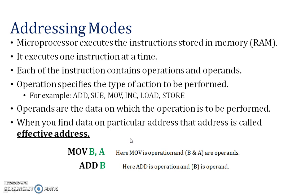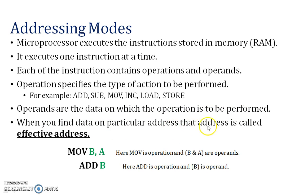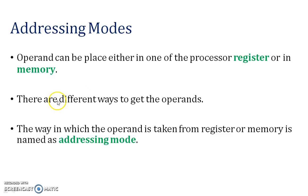Now we will see addressing modes. The functionality of a microprocessor is the execution of instructions. Instructions are stored in memory; the microprocessor executes one instruction at a time. Each instruction contains an operation and operands. Operands are the data on which the operation is to be performed. When you find data at a particular address, that address is called the effective address — this is important for the addressing modes topic.